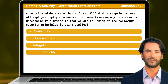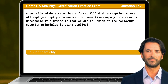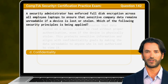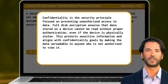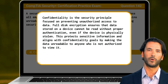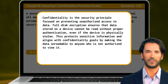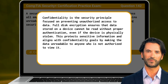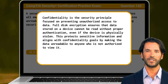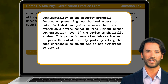The answer is D: Confidentiality. Confidentiality is the security principle focused on preventing unauthorized access to data. Full disk encryption ensures that data stored on a device cannot be read without proper authentication, even if the device is physically stolen. This protects sensitive information and aligns with confidentiality goals by making the data unreadable to anyone who is not authorized to view it.